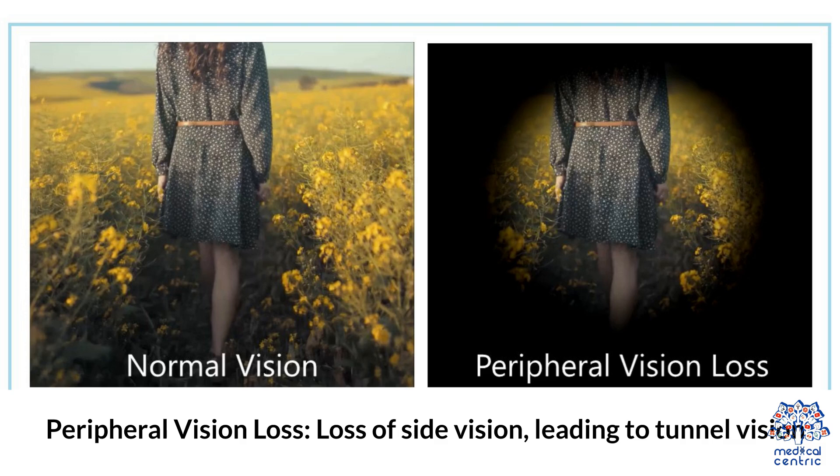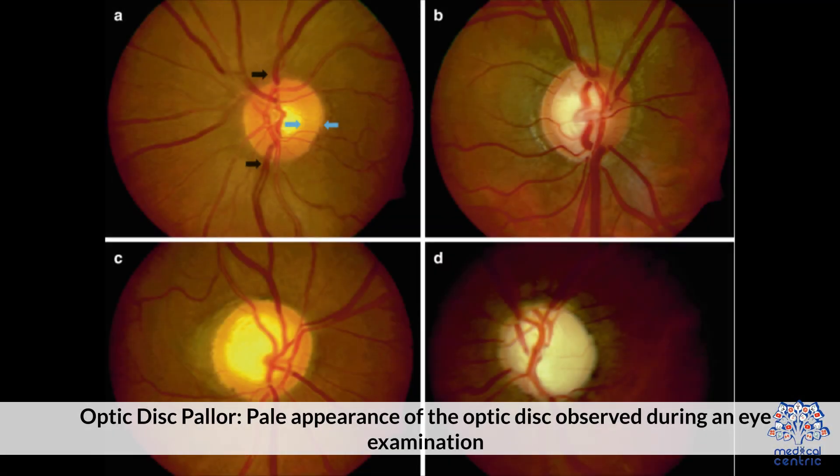4. Peripheral vision loss — loss of side vision leading to tunnel vision. 5. Optic disc pallor — pale appearance of the optic disc observed during an eye examination.